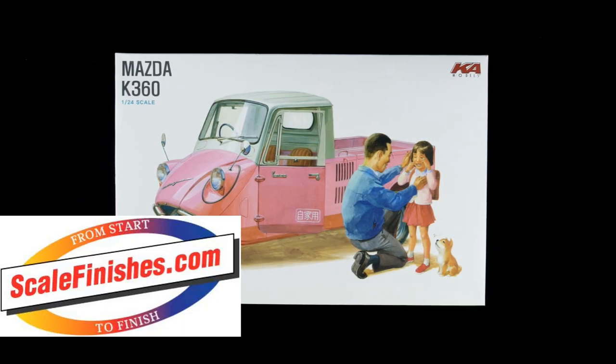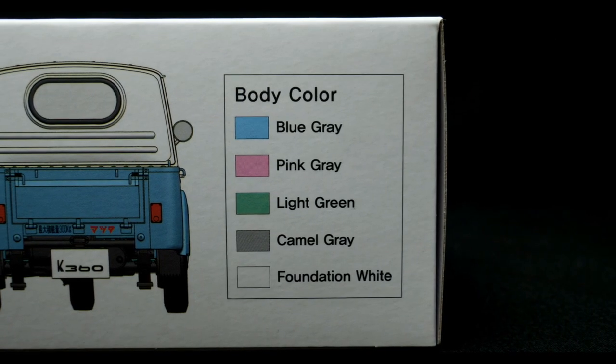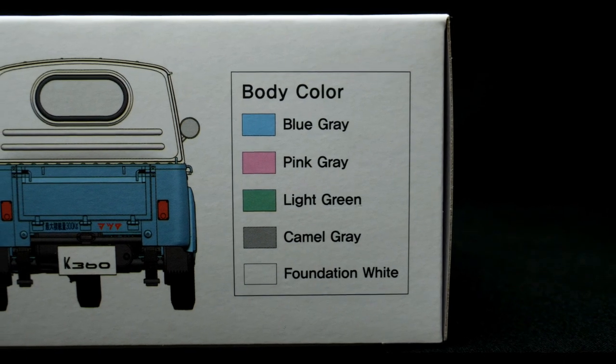Didn't know we needed this three-wheeler in our lives until it was announced. Now it's here and now we need it in our lives. It is the Mazda K360 kit from Ka Models, however you pronounce it. And it's today's What's in the Box.